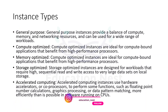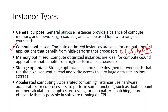Compute optimized is best when working with compute-bound applications that require high performance processors or HPC. Use cases include processing batch workloads, media transcoding, scientific modeling, and machine learning. Any instance starting with 'C' — like C1 or C5 — is compute optimized. HPC6A is also an example of compute optimized.